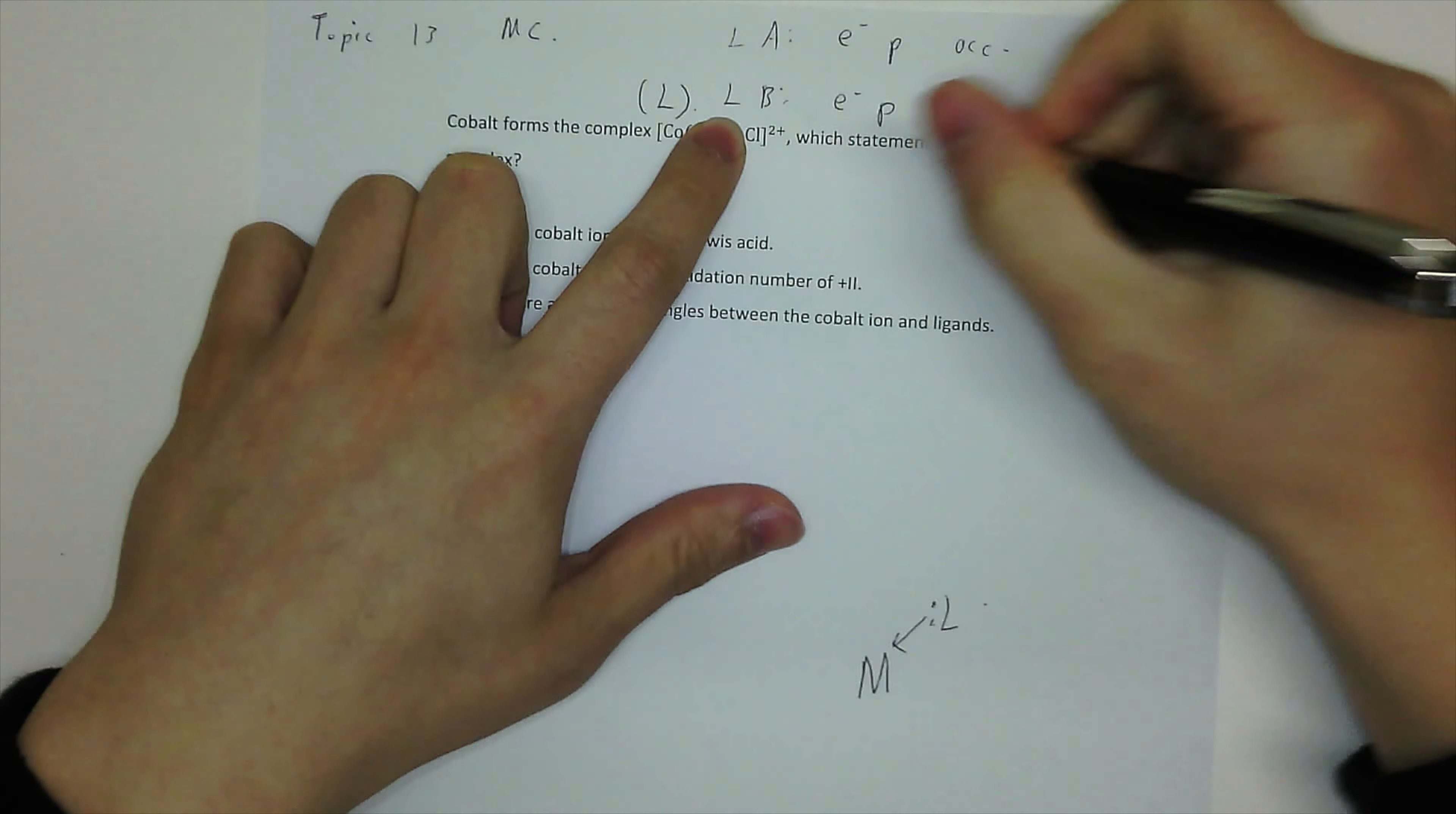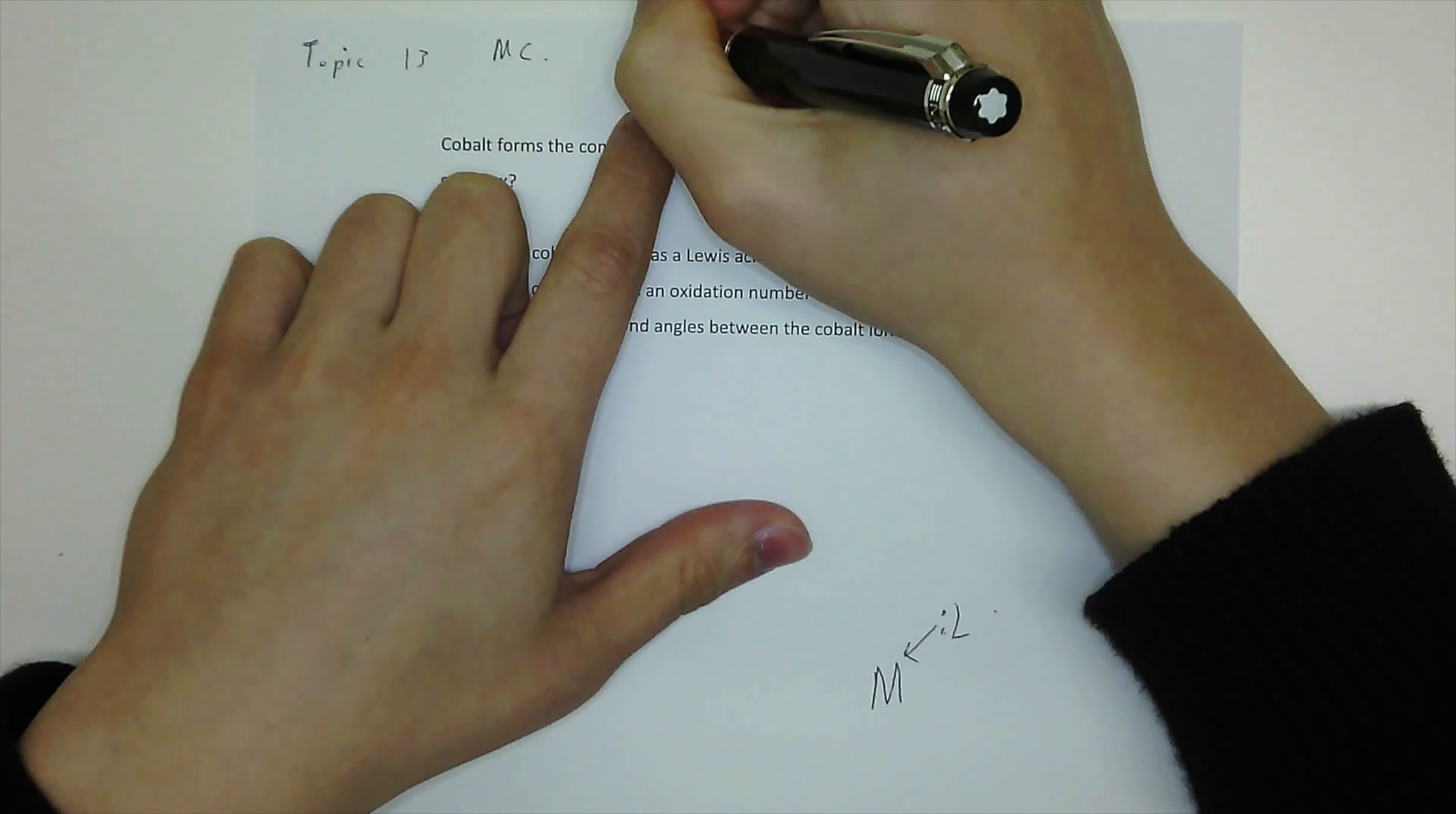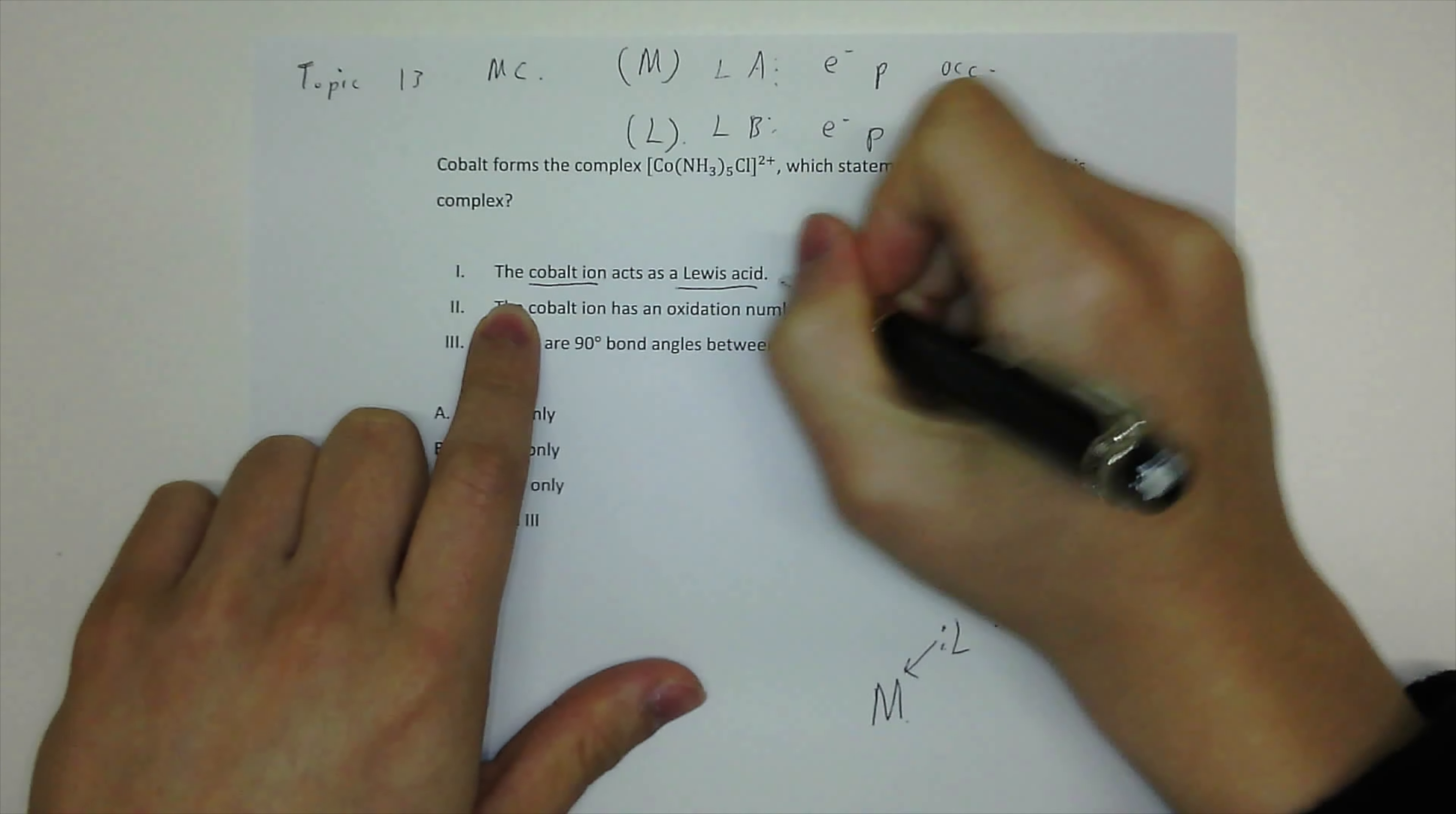So ligand is a Lewis base, electron pair donor. All ligands will donate a lone pair electron to the metal ion, and they form a dative bond. And the metal ion, the central metal ion is always a Lewis acid. So now the cobalt ion is Lewis acid is correct.